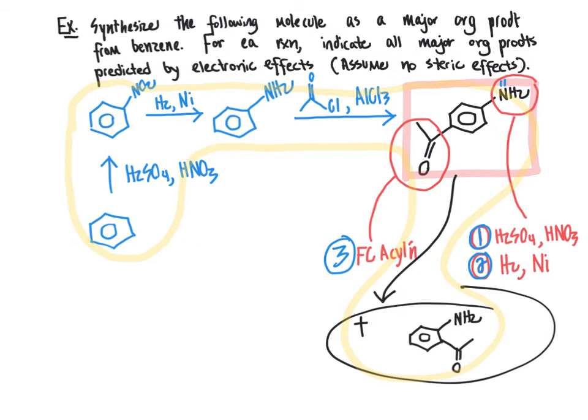The keys to this are thinking systematically and learning to think backwards. One way to help yourself is to get organized by asking how you can create each of the groups attached to the aromatic ring. Then ask yourself what order you need to carry out those reactions to give the correct regioselectivity — whether to make the ortho/para products or the meta product, depending on your target.